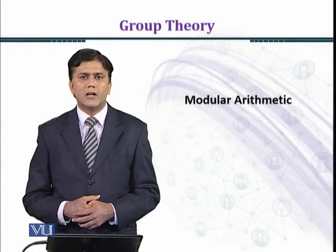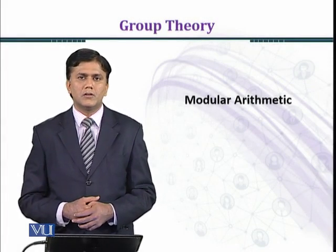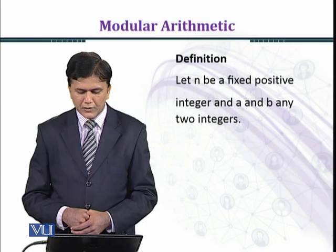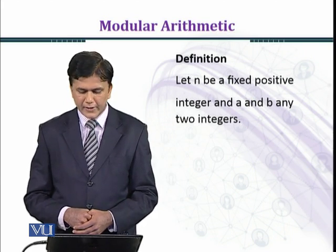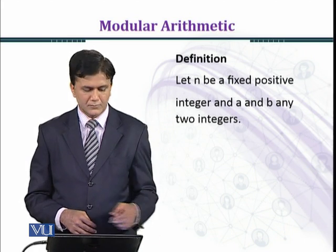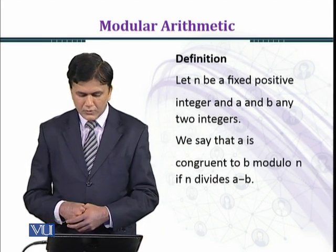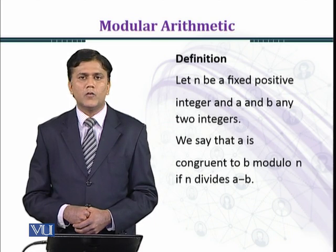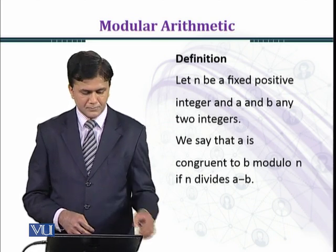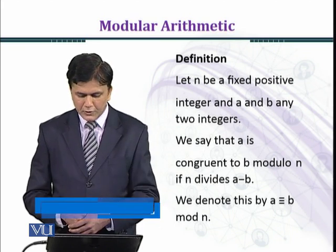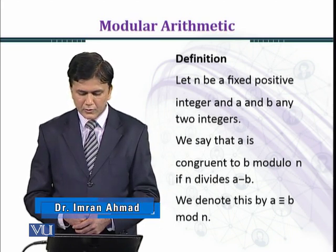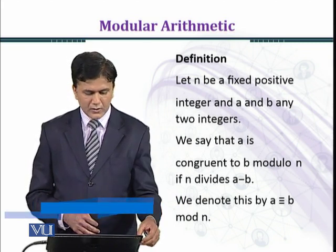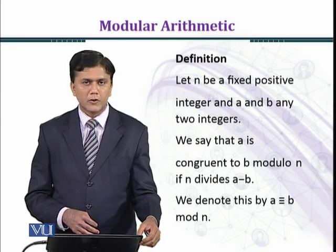In this module, we shall discuss Modular Arithmetic. Let n be a fixed positive integer and a and b be any two integers. We say that a is congruent to b modulo n if n divides a minus b. We denote this by a congruent to b modulo n. This is the definition of a congruent to b modulo n.